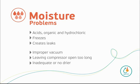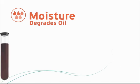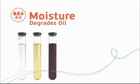Any residual moisture needs to be trapped by a properly sized dryer. Here we see three oil samples: one containing fresh, unused refrigeration oil, and the middle sample showing the typical color after coming out of a system, which is perfectly acceptable.